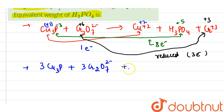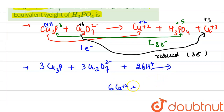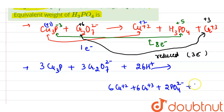The balanced equation is: 3Cu₃P + 3Cr₂O₇²⁻ + 26H⁺ → 6Cu²⁺ + 6Cr³⁺ + 2PO₄²⁻ + 13H₂O, since the reaction is in acidic medium.